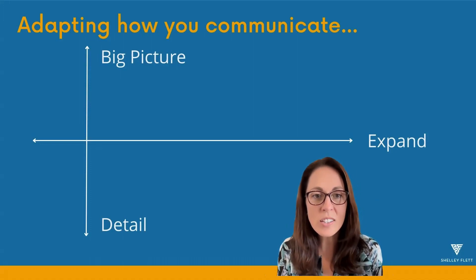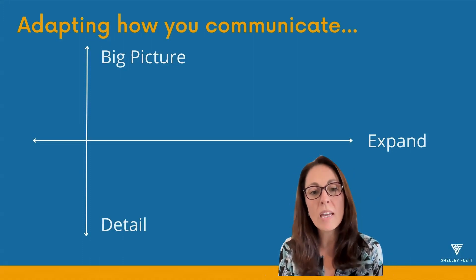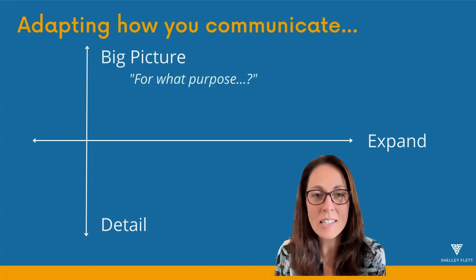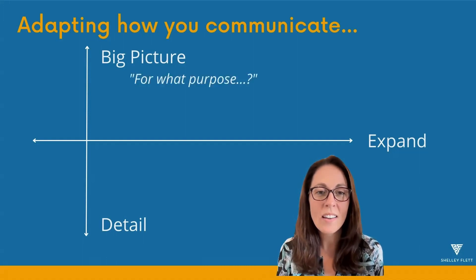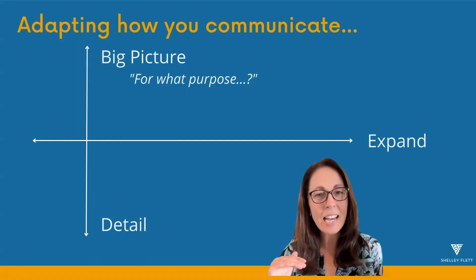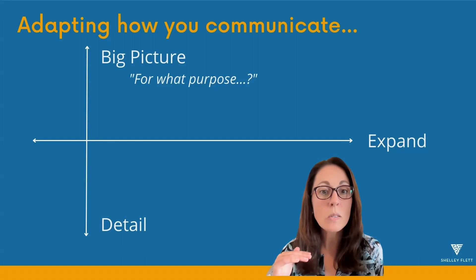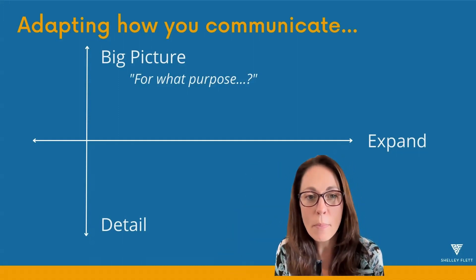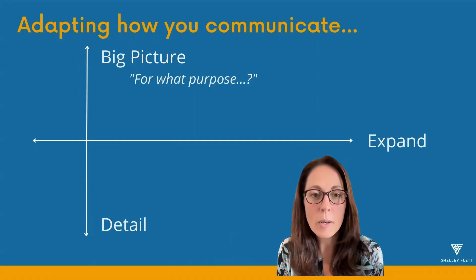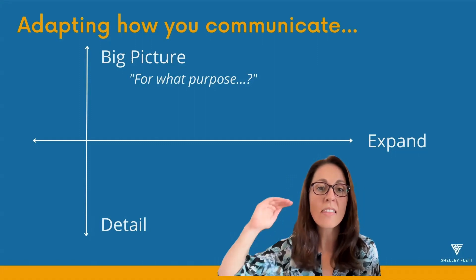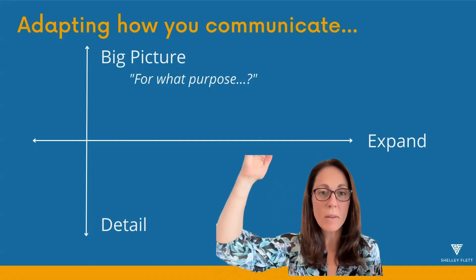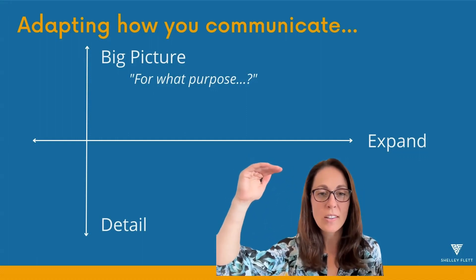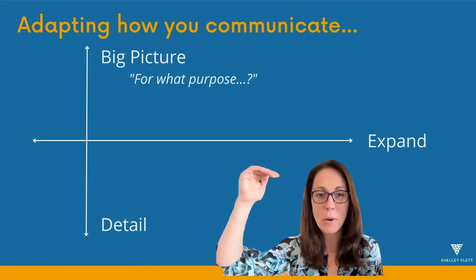There are three questions we can ask to move between big picture, detail, and expanded thinking. Starting with big picture: if I want to get someone to connect something specific with the bigger picture, the question I ask is 'for what purpose?' The more you ask 'for what purpose,' the higher you go in terms of big picture — the more strategic and visionary you can get. So 'for what purpose,' and 'for what purpose that,' and 'for what purpose that?'